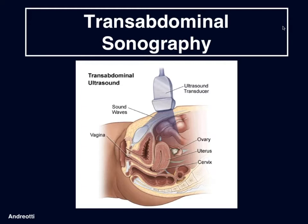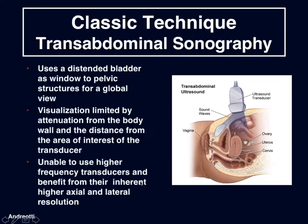Here we have an image showing the transabdominal probe and how it's placed on the abdomen, and we can see the pelvic organs beneath it that we are imaging. With transabdominal sonography, we use a distended bladder as a window to pelvic structures for a global view. But visualization is limited by attenuation from the body wall and the distance from the area of interest of the transducer, so we are unable to use higher frequency transducers and benefit from their inherent higher axial and lateral resolution as we will with transvaginal imaging.